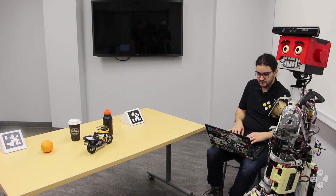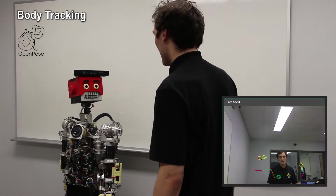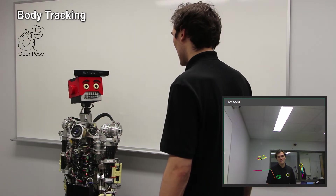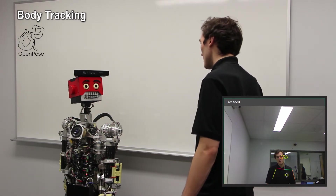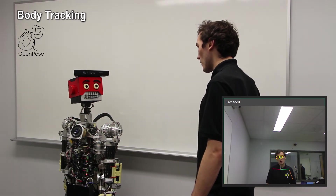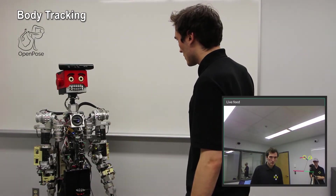Using an RGBD camera in tandem with deep neural networks, IRL1 is aware of the environment and can interact naturally with the human player. IRL1 makes use of the OpenPose library to identify the player's head, and then tracks the player by moving its head and its gaze accordingly.